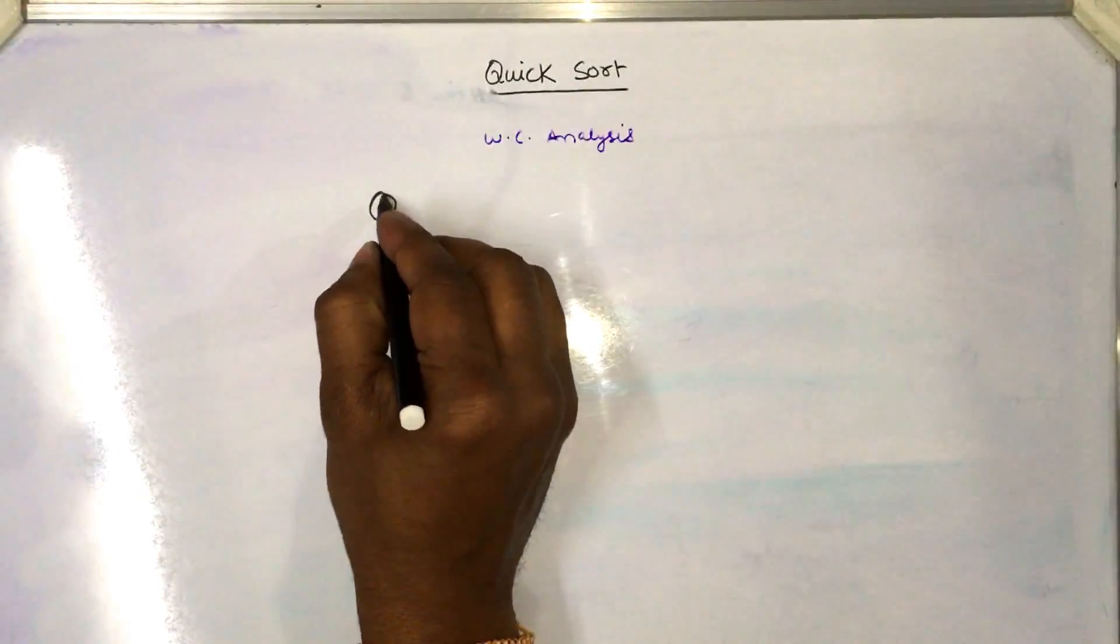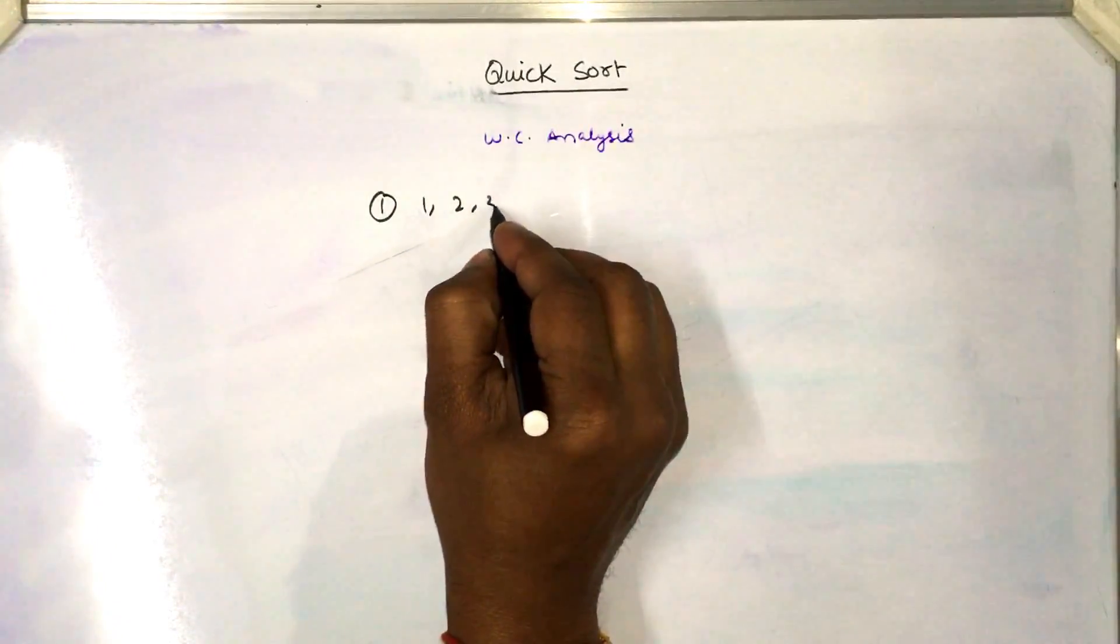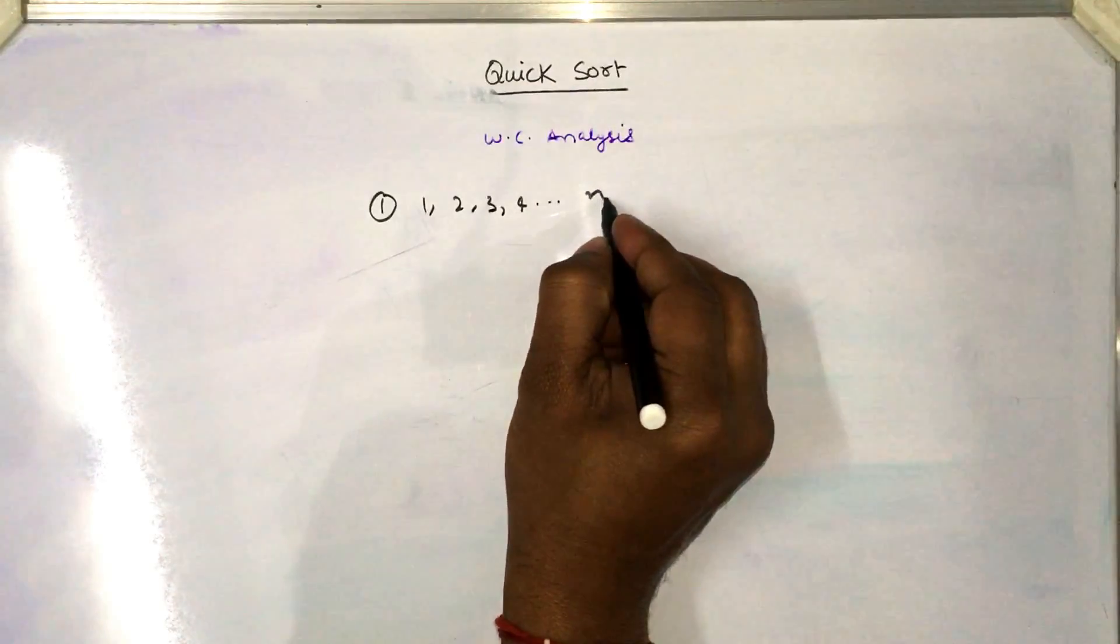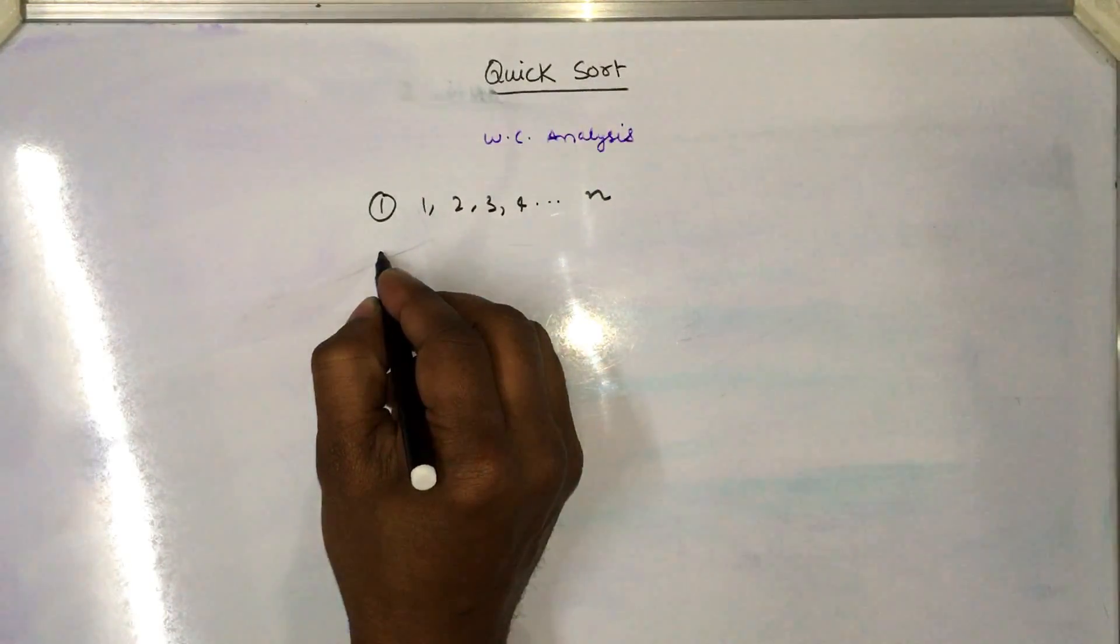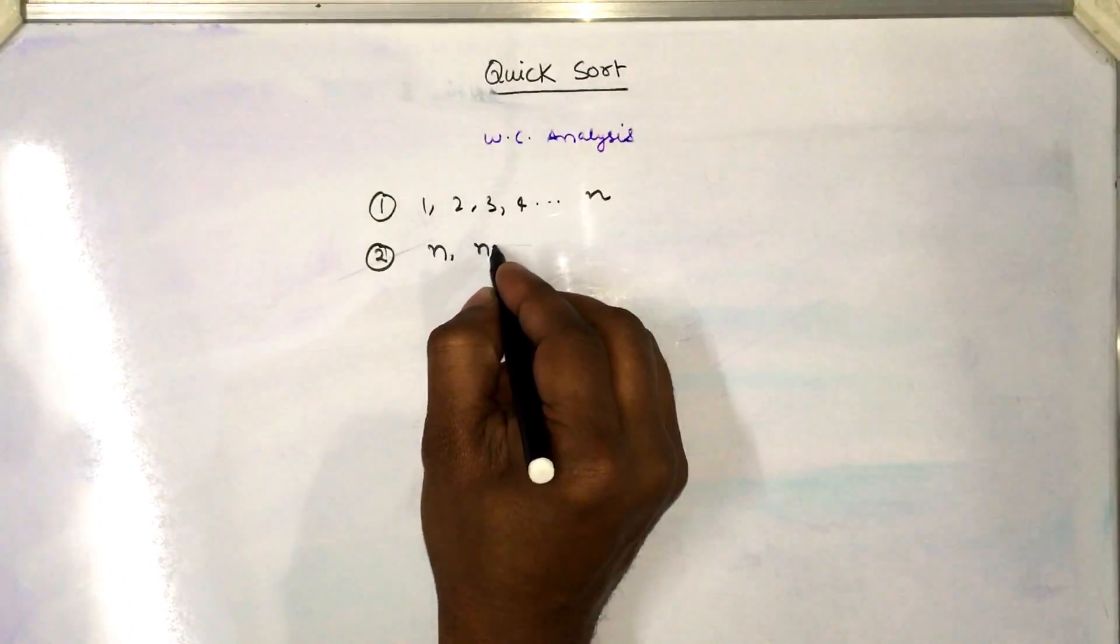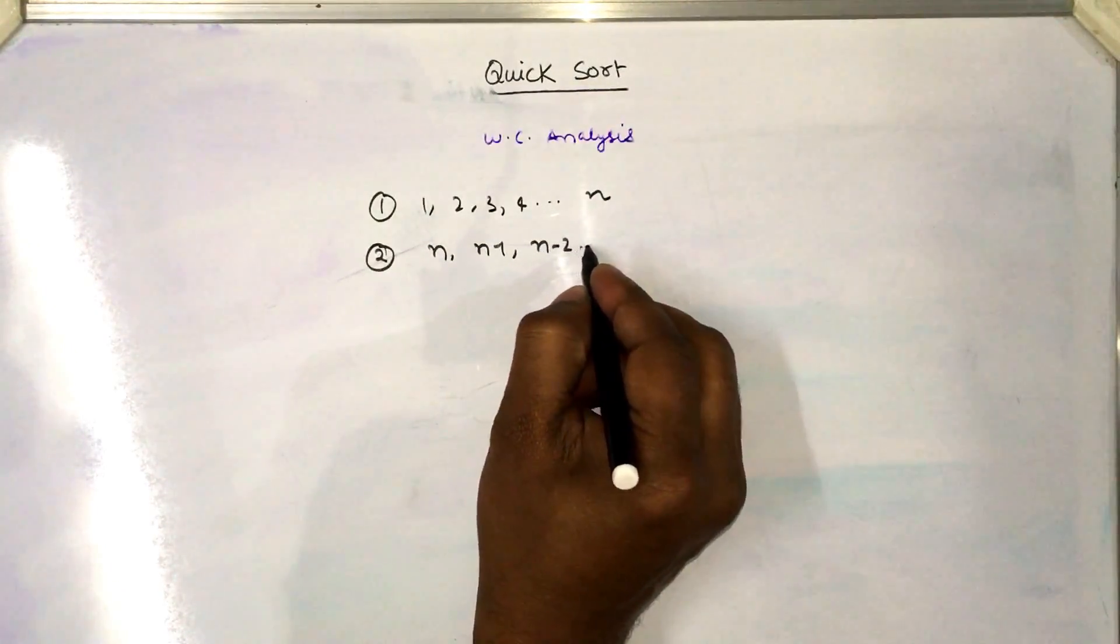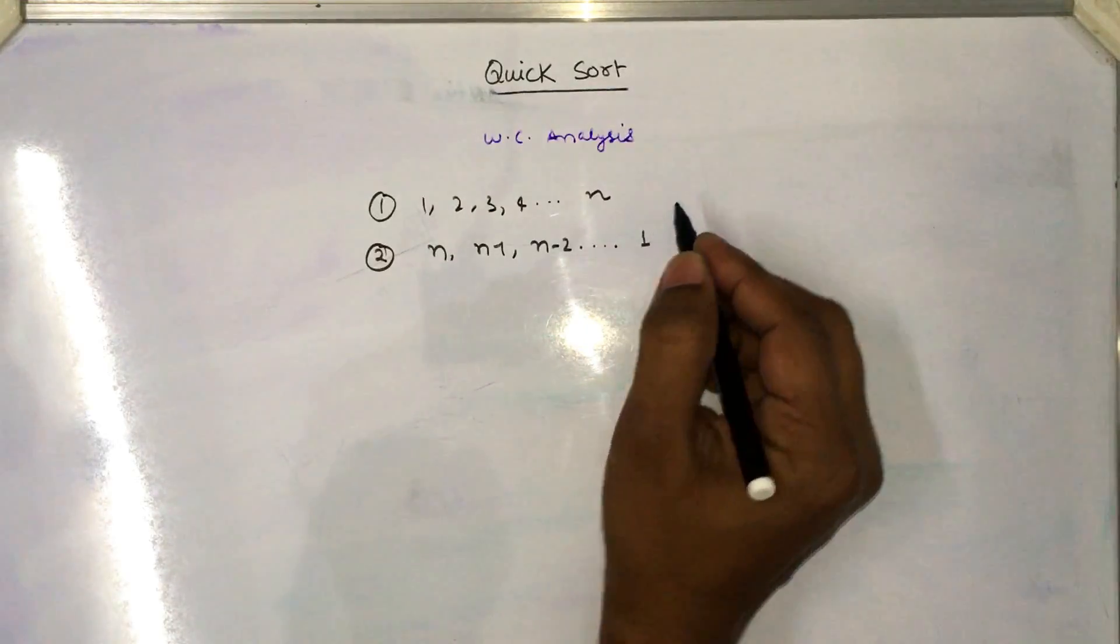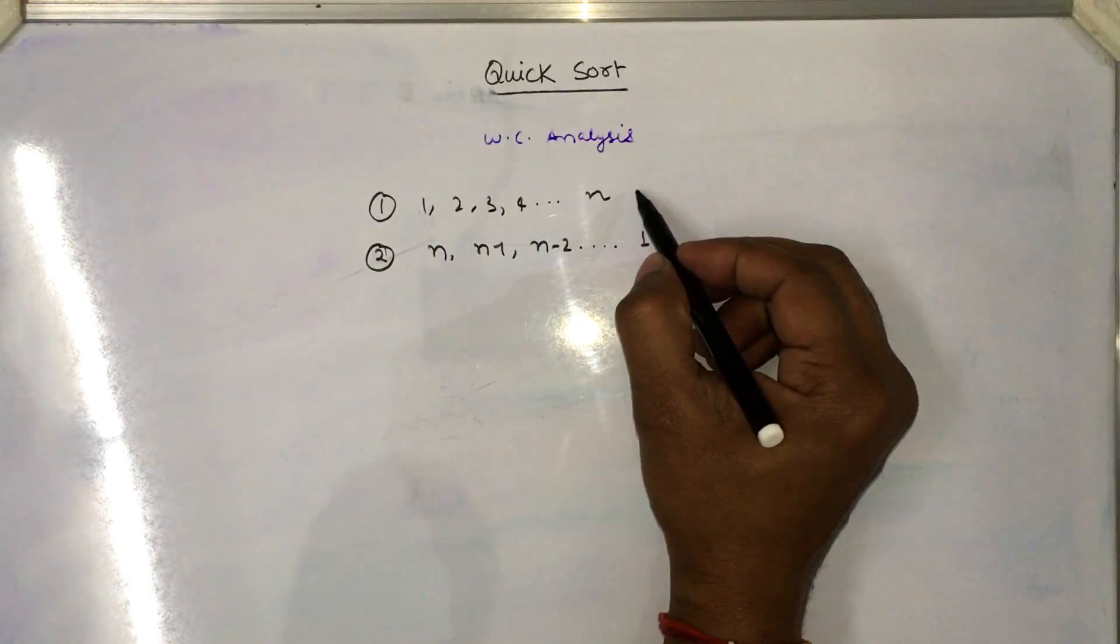If we are given a sorted sequence from 1, 2, 3, 4 and so on up to n, or another sorted sequence as n, n-1, n-2, up to 1. These are sorted sequences which is sorted in ascending order. In the second one, the elements are sorted in descending order.